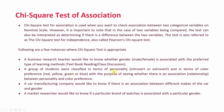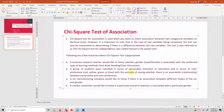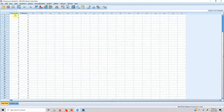A group of students were classified in terms of their personality — introvert or extrovert — and in terms of color preference — red, yellow, green, or blue — to see whether there is an association between personality and color preference. A car manufacturing company would like to know if there is an association between different makes of the car and gender. A market researcher would like to know if a particular brand of watches is associated with a particular gender.